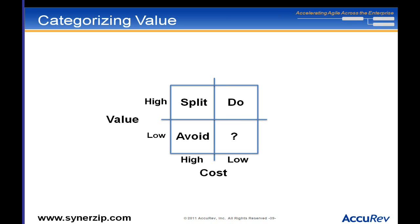If you can take something that's high value and high cost and turn it into a bunch of stories — some high value and low cost, others low value and high cost — you've made your problem simpler. Now all the pieces that are low value and high cost, you can avoid those. That's not always easy, but to the extent you can do it, this is a great framework to follow.